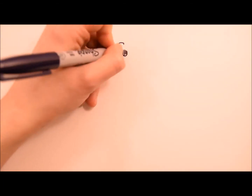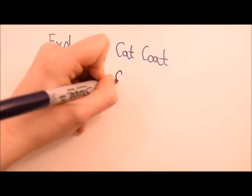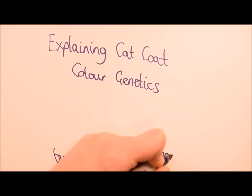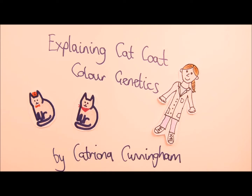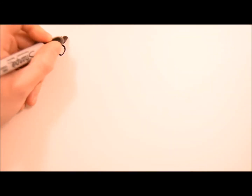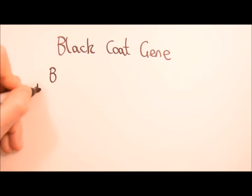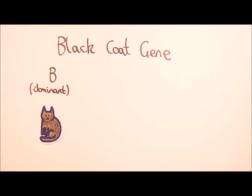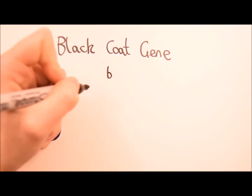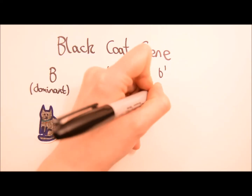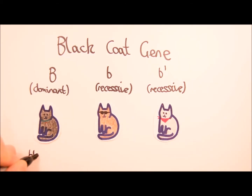Welcome to part 2, explaining cat coat colour genetics. This is where things get more interesting. Cats have three alleles for black coat. The dominant allele produces black fur, then the two recessive alleles produce chocolate and cinnamon coat colours.